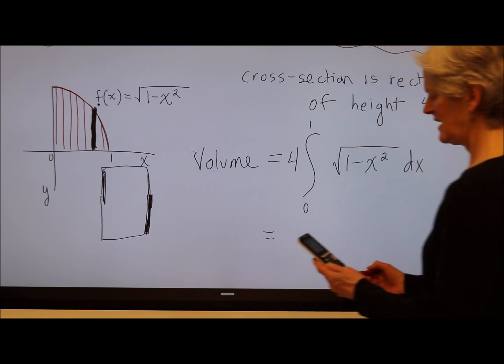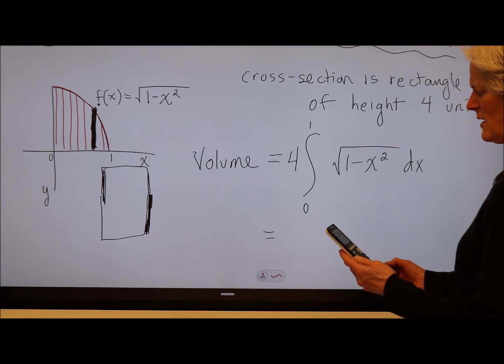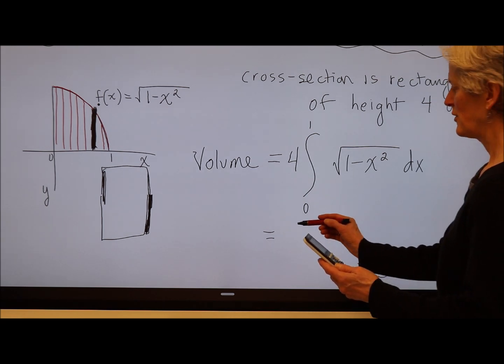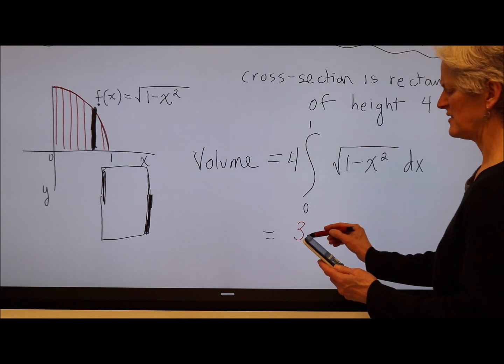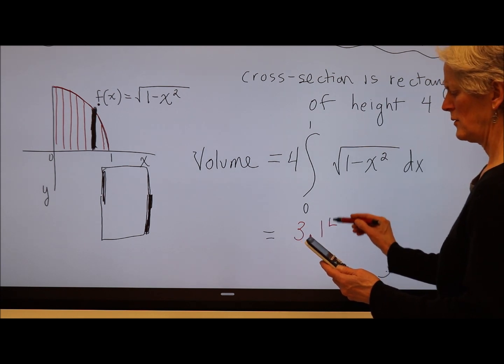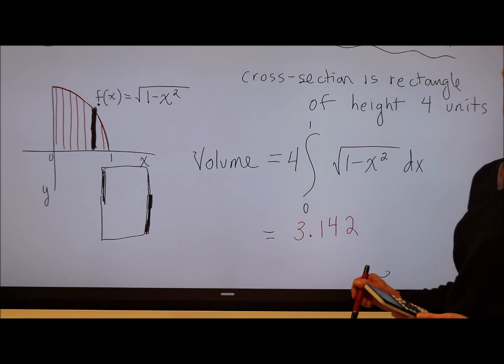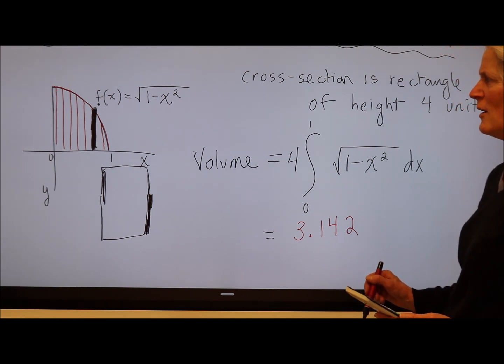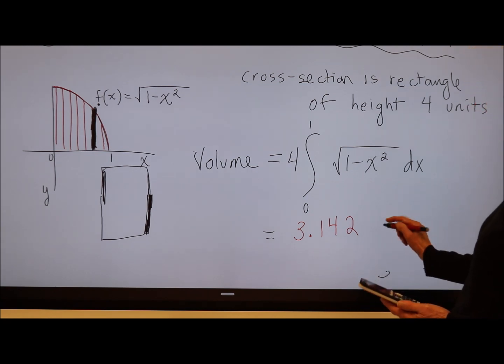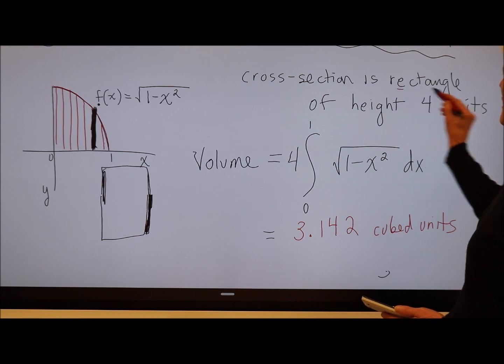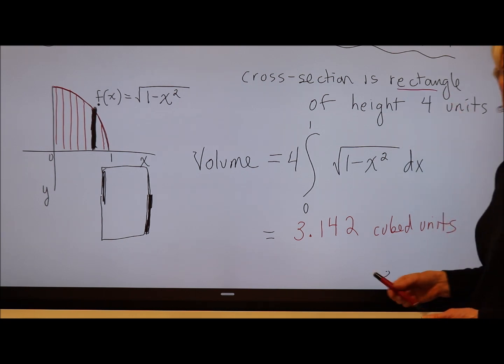I got an answer of, oh my goodness. I'm going to round it to three decimal places. Wow, my answer looks enormously like pi. That is wild. Uh, cubed units. Whatever my units are, since I'm finding a volume. So that would be when I have a cross section that's a rectangle.